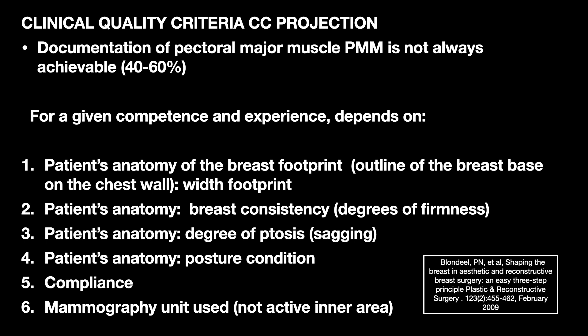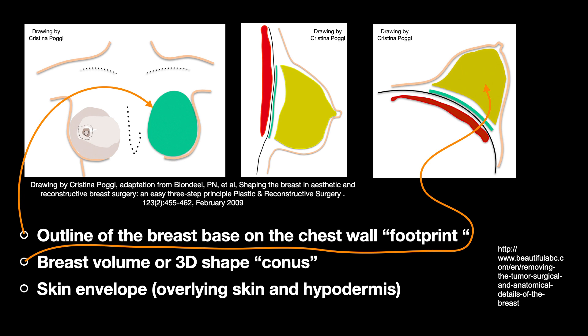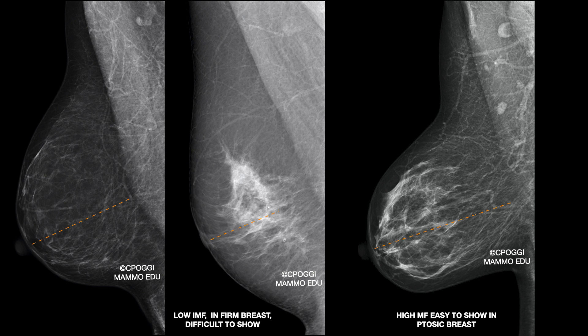Very important are the patient's posture and compliance too. It also depends on the mammography unit we work with. The footprint is shown in green, the volume of the breast in yellow, and the skin envelope in pink. This concept comes from an idea developed by Dr. Brondil, an internationally known plastic surgeon, but it is equally valid for breast radiographers. These are three cases with different anatomical parameters for extension of footprint, volume, and skin envelope, all of which have a huge impact on the quality of images we can produce.